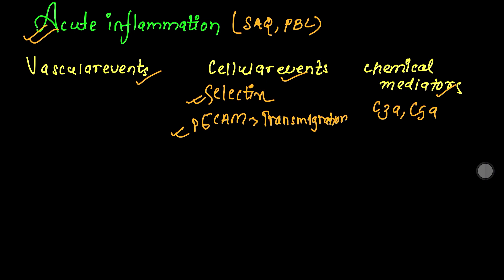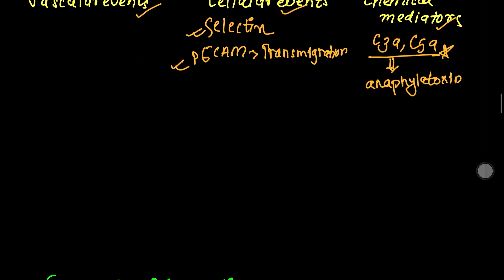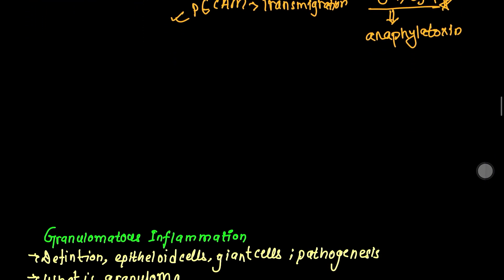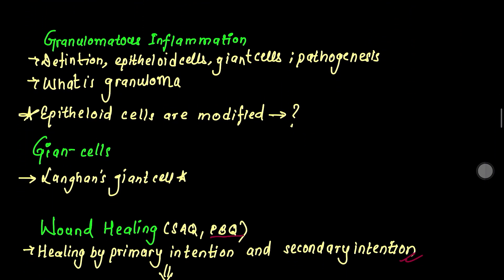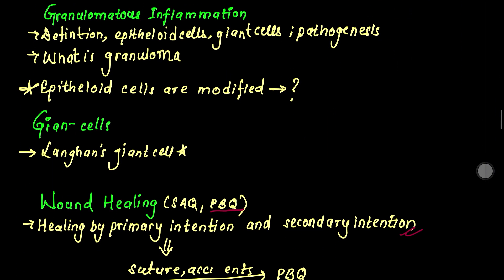In chemical mediators, we have anaphylotoxins as a key concept. These are the important repeated points for MCQs. Next, we will cover the same information for chronic inflammation.